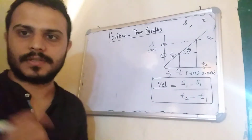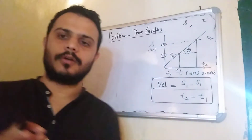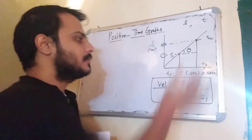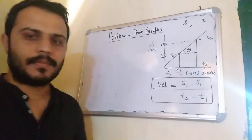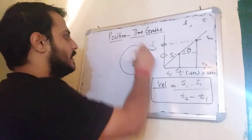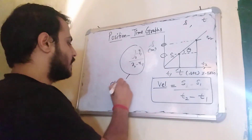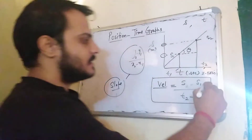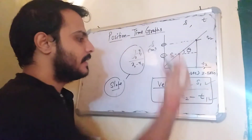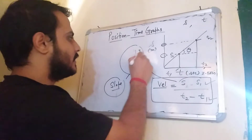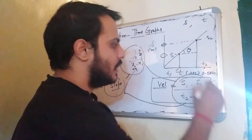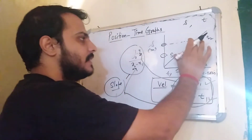What is the formula for slope? The slope formula is (Y2 minus Y1) divided by (X2 minus X1). So the slope of the graph is (S2 minus S1) divided by (T2 minus T1), which is exactly the velocity formula. So this is basically the slope of the graph.